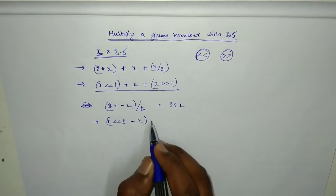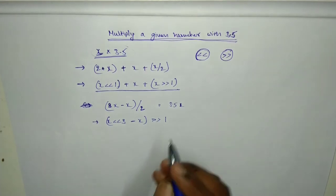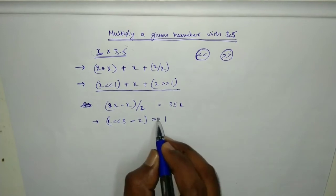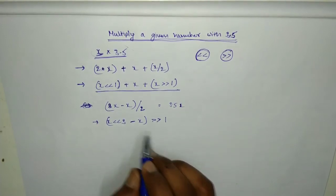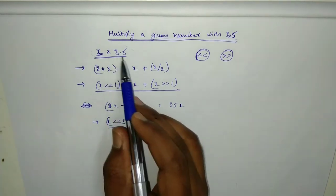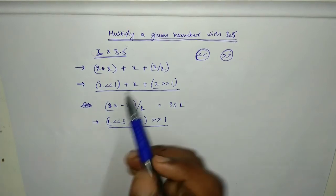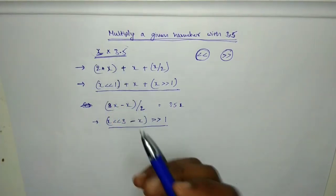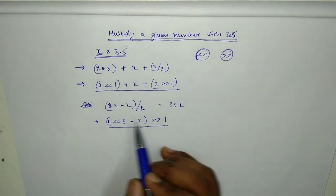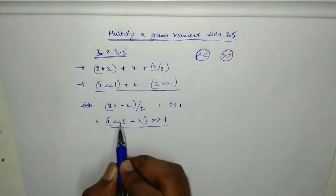So this is how, using this expression, we can multiply a number by 3.5. This is just a small example that we are telling, that we can do some miracles kind of thing using the left shift and right shift. So here we are doing left shift thrice because...